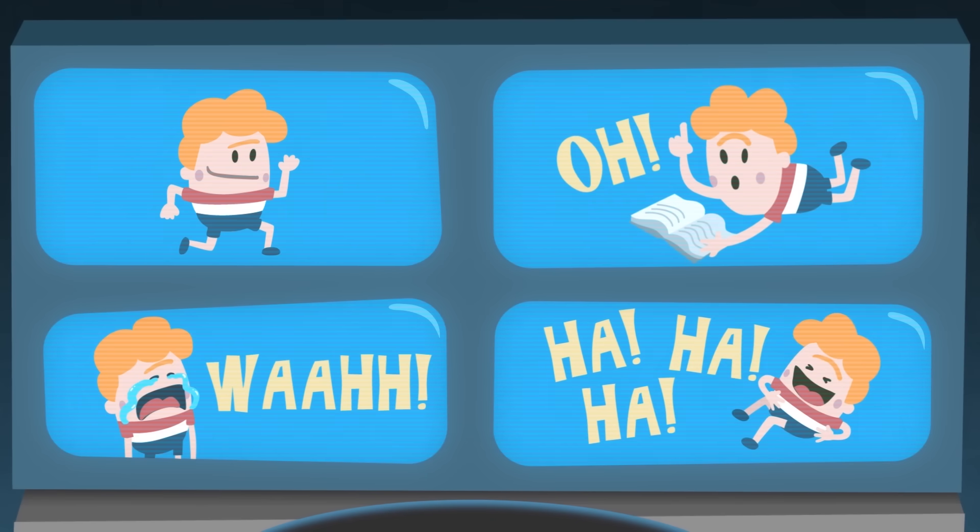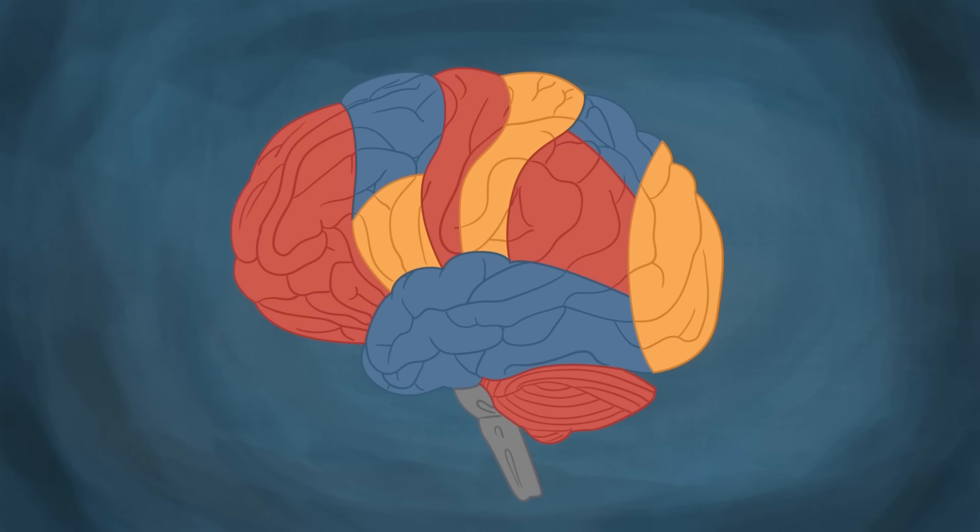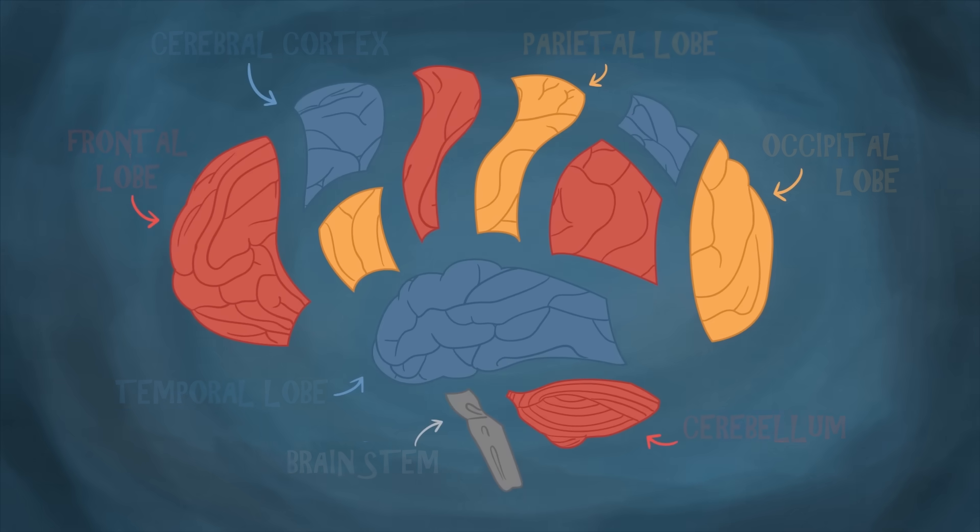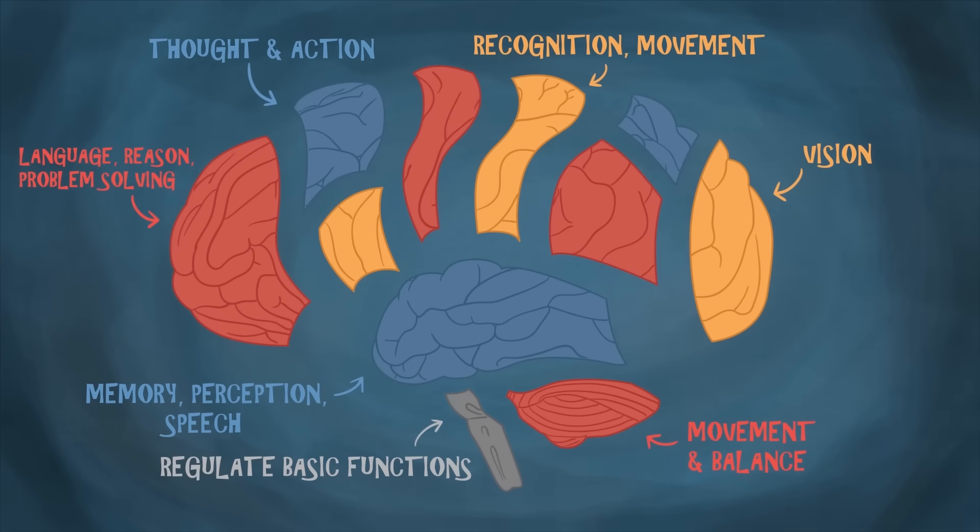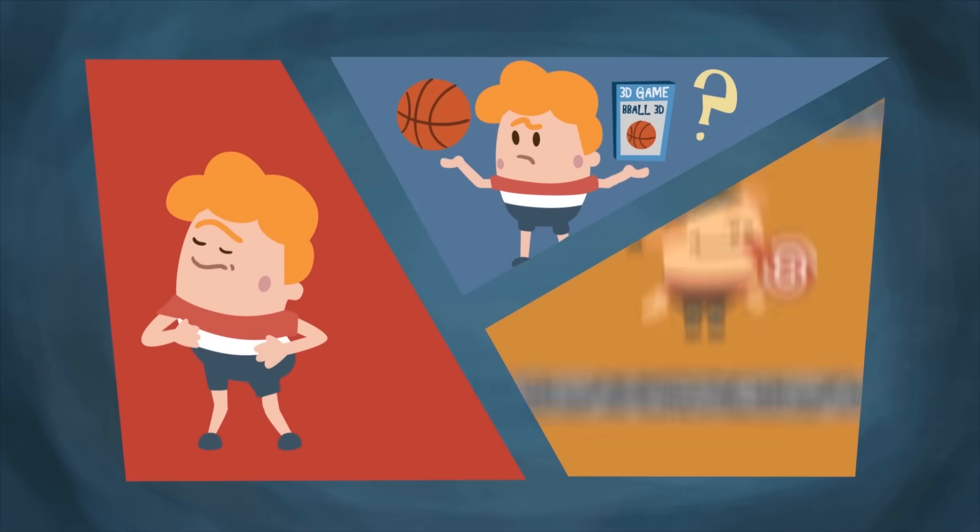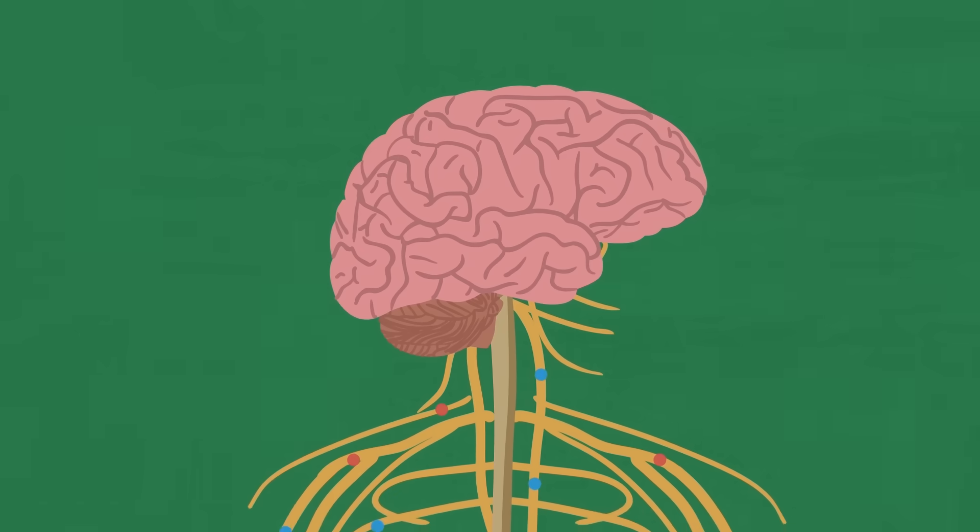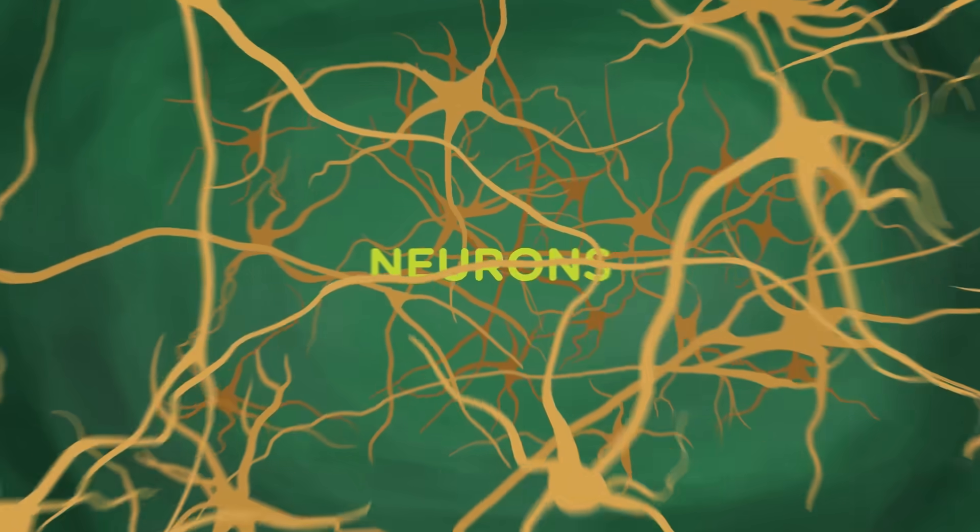To do all of these jobs, your brain contains many different parts. Each part is focused on a specific function like movement, decision-making, memory - pretty much everything.